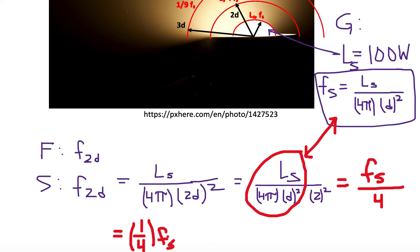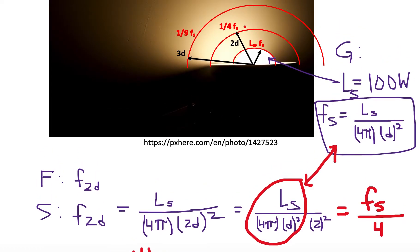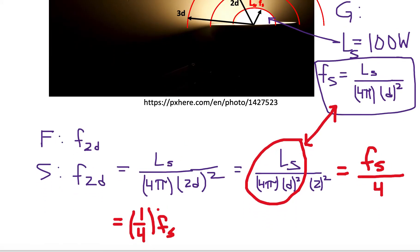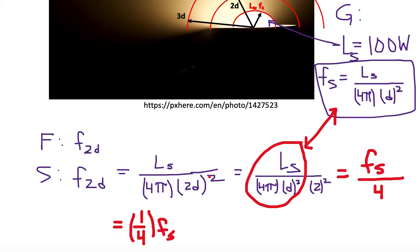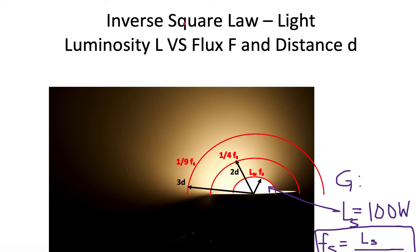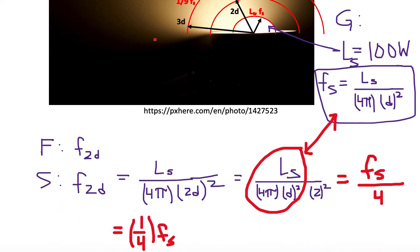As you step further and further away, the brightness or flux decreases lower and lower. Notice that distance is squared and it's in the denominator — it's the inverse. It's always squared. This is called an inverse square law: wherever you are squaring distance in the denominator, it's an example of an inverse square law. Light is an example of an inverse square law.